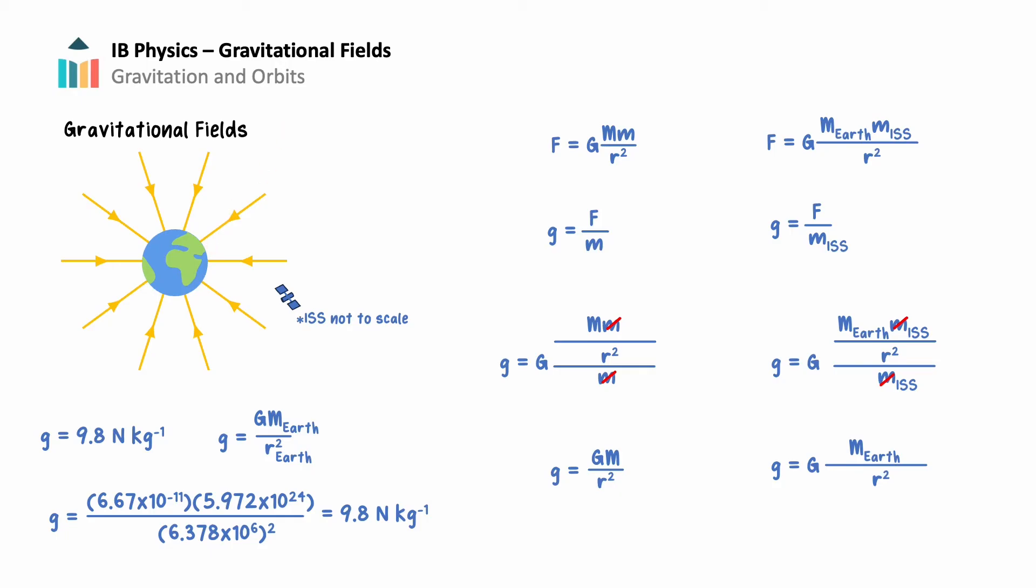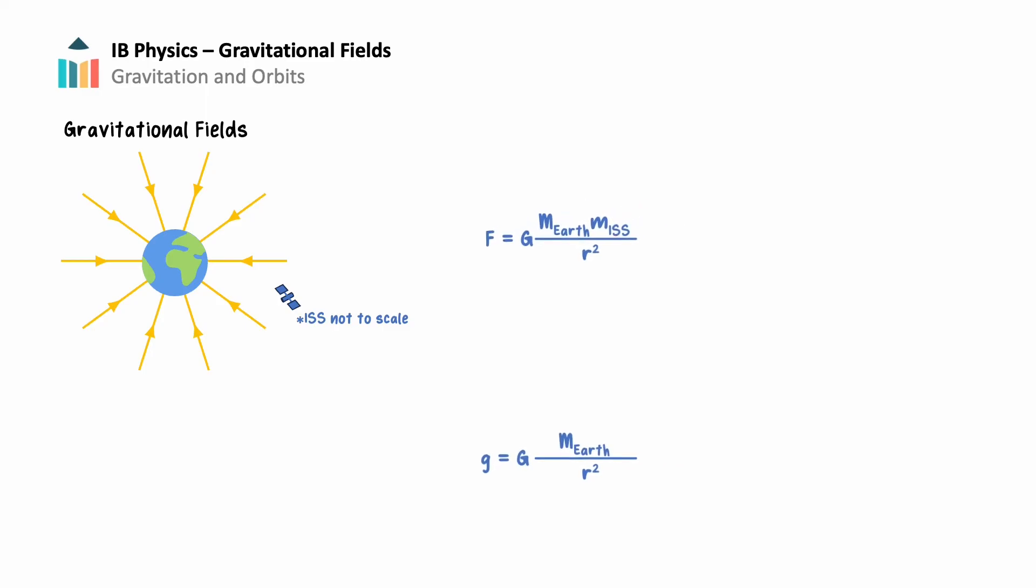Many struggle to distinguish between gravitational fields and gravitational forces. To help overcome this difficult concept, think about the ISS in this situation. Regardless if the ISS is there or not, Earth is there causing a gravitational field at that point. The strength of that gravitational field can even be calculated using our equation. However, there is no force there. Once I place the ISS in that gravitational field, now there is a force of gravity on the ISS from Earth, and a force of gravity on the Earth from the ISS as illustrated by our equations. Therefore, a gravitational field is always there. However, a gravitational force is only applied when objects with mass are placed in the gravitational field.